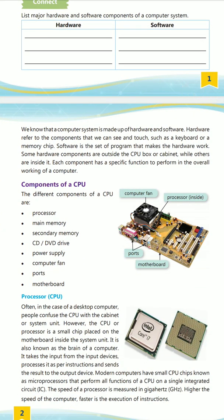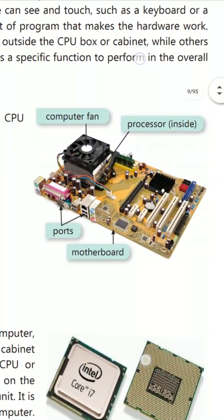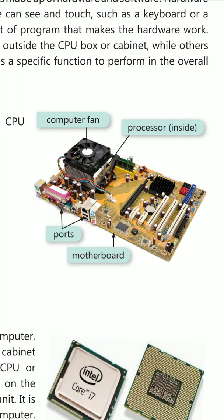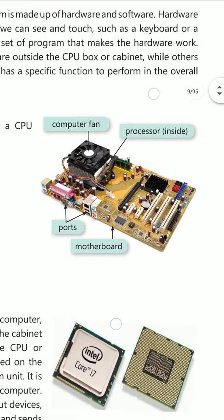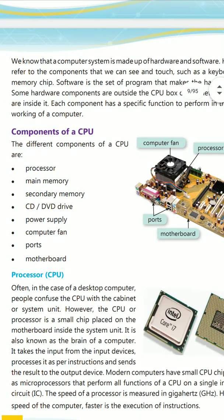First, we are going to learn about components of the CPU. Looking at this diagram, you can see the computer fan. The processor is placed below, inside the CPU, underneath the computer fan. Ports are also there — VGA port, USB port, and LAN port. The motherboard is also present — the whole plastic dashboard. The components of a CPU are: processor, main memory, secondary memory, CD/DVD drive, power supply, computer fan, ports, and motherboard.